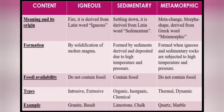Next: metamorphic rocks. The word metamorphic means 'change of form or shape,' derived from the Greek word 'metamorphic.' These rocks are formed when igneous and sedimentary rocks are subjected to high temperature and pressure. They do not contain fossils. Types are thermal and dynamic. Examples are quartz and marble, which we commonly use in our homes.